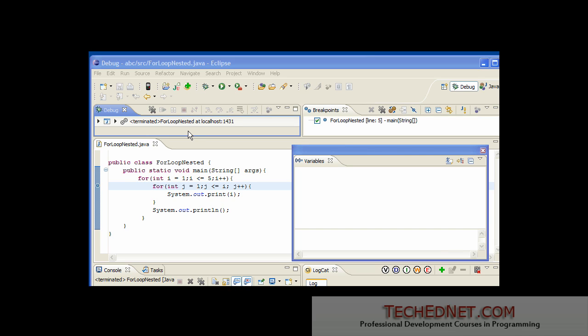To understand this nested for loop, I have set up Eclipse. Eclipse is a Java IDE, Integrated Development Environment, where you can write your program, test it, debug it, and compile it. You can do everything from within the IDE. That's why it is called the Integrated Development Environment.